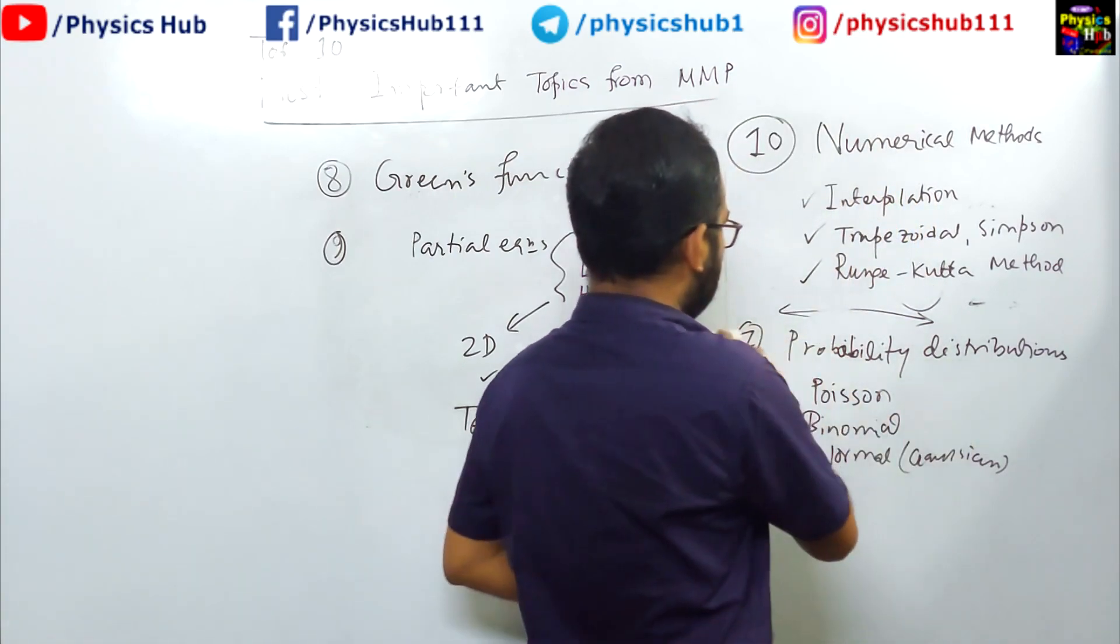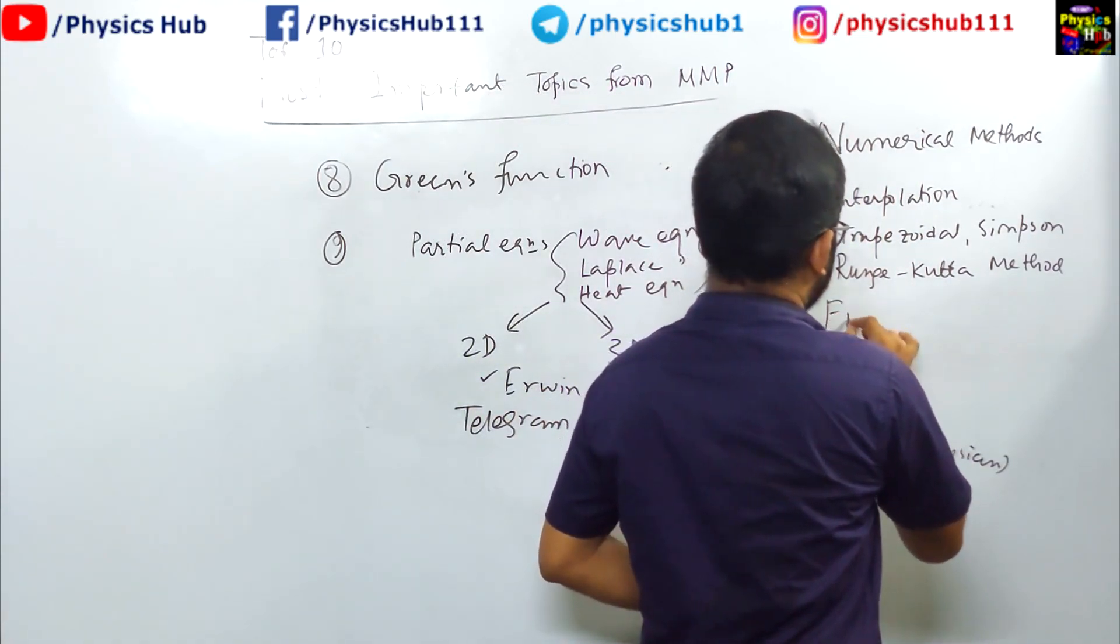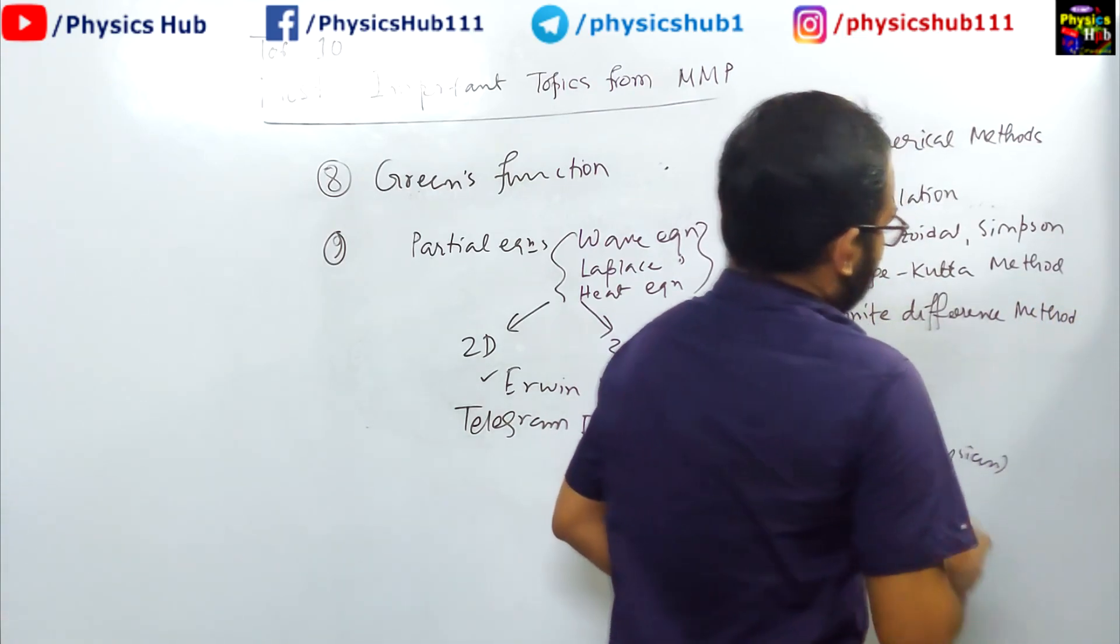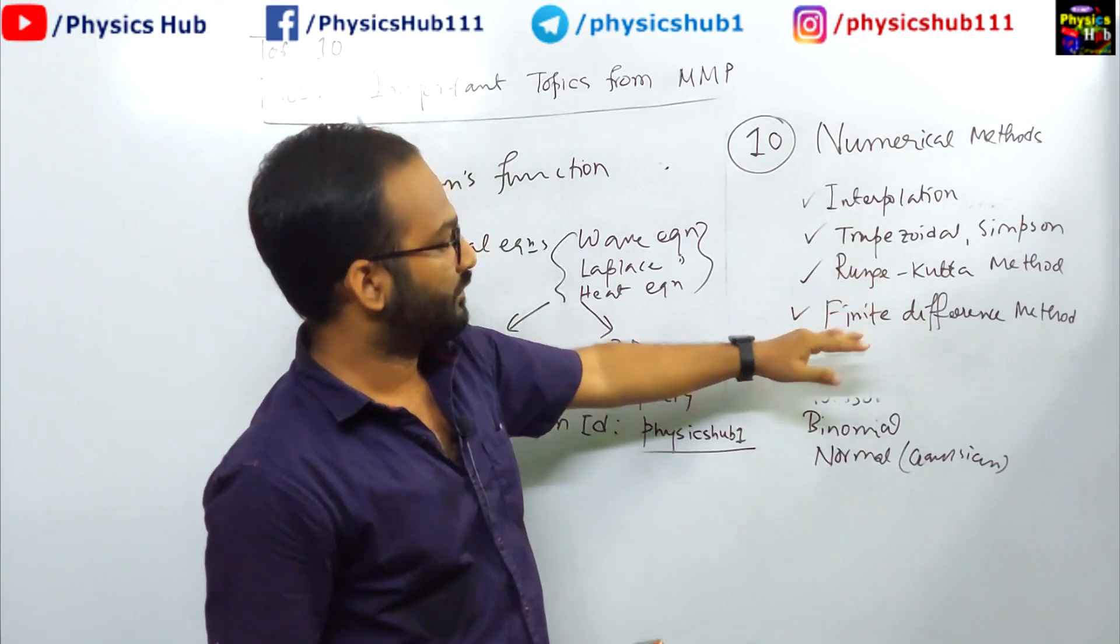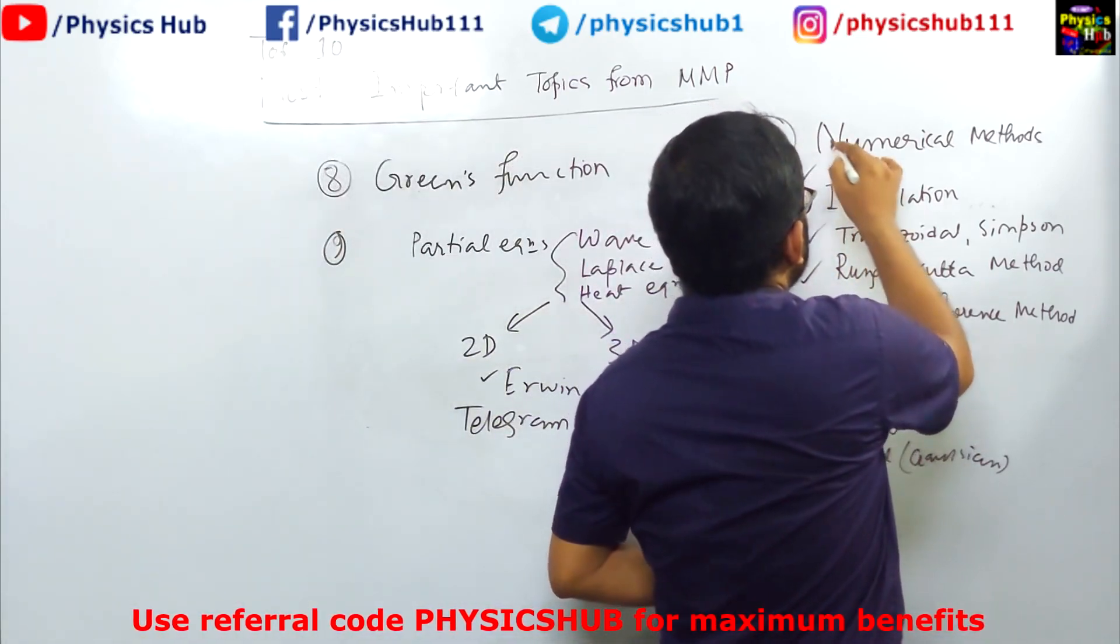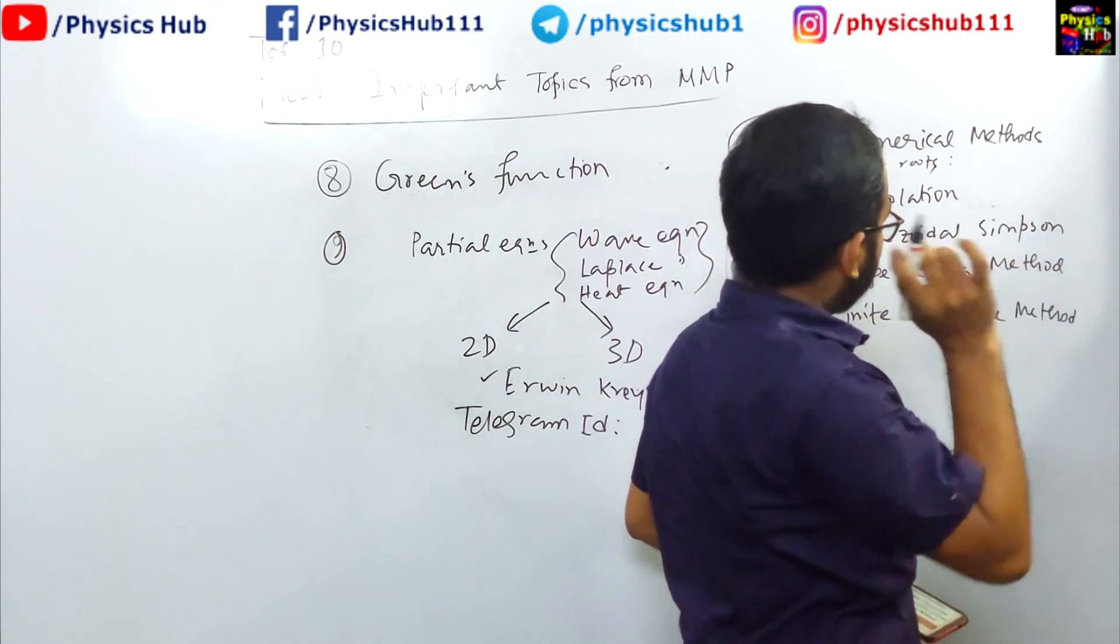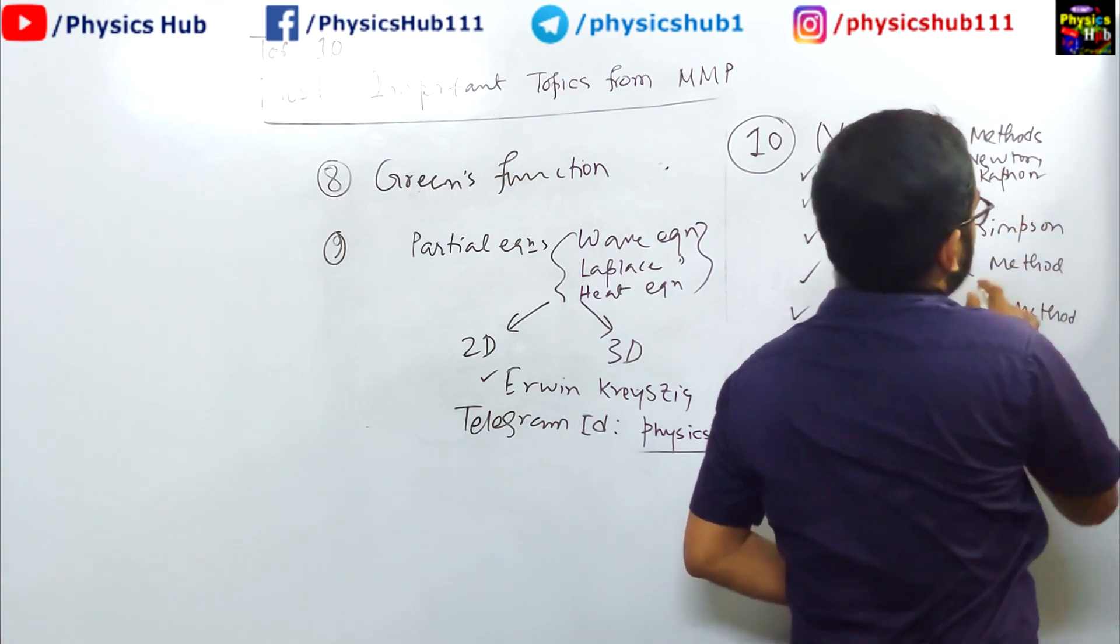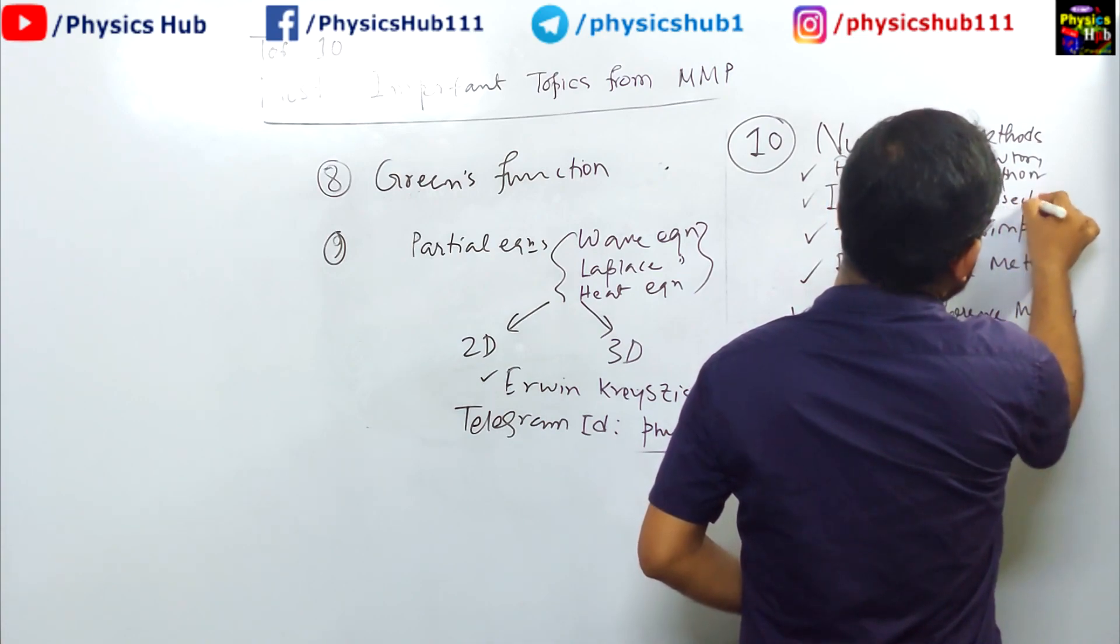Finally, one topic is there which is very important for the upcoming CSIR net exam, which is finite difference method. I think I have shared some image for this finite difference method, a one page description. Otherwise I will share it in the telegram group if you want. Another topic is finding roots under numerical methods. Here you have Newton-Raphson, which is very important, and another technique is the bisection method. So these two techniques you should learn in finding roots.